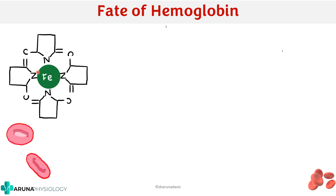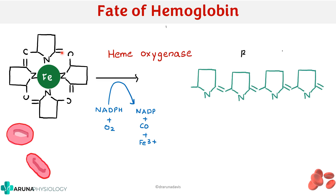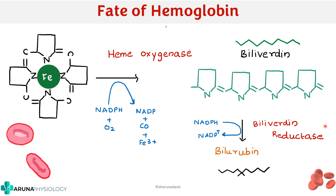This is the structure of heme. RBCs contain heme as well as globin. The heme part contains iron and a protoporphyrin ring. When acted upon by the enzyme heme oxygenase it gets converted to biliverdin — the iron is released and the ring is broken, giving a straight structure. This biliverdin is then acted upon by biliverdin reductase.